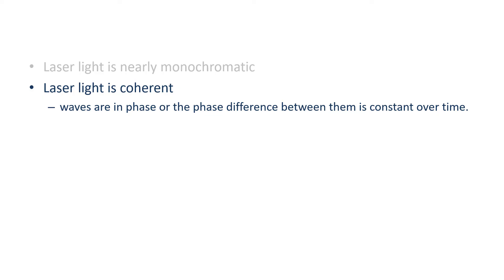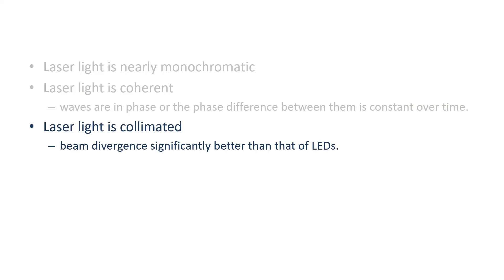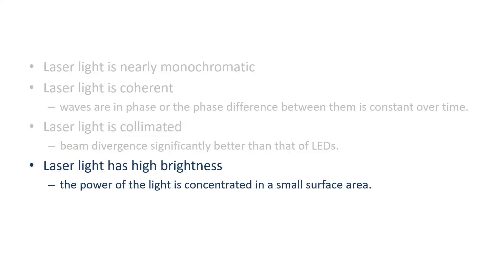Now, laser light is collimated. That is to say, light waves travel almost in the same direction, making their beam divergence significantly better than that of LEDs. Laser light has high brightness. In other words, the power of the laser light is concentrated in a small surface area.